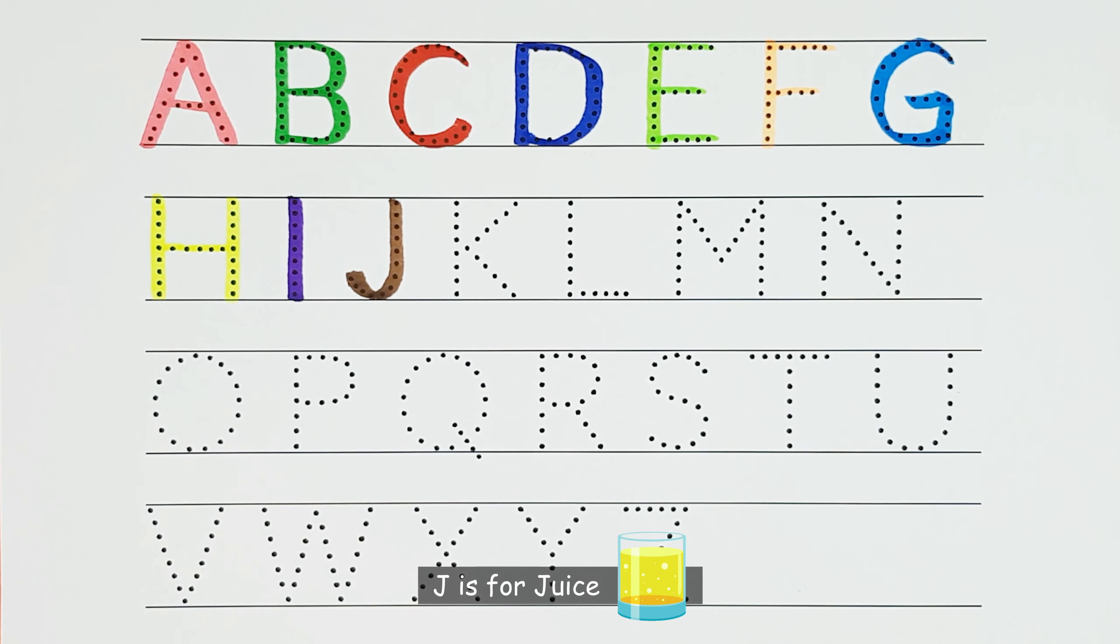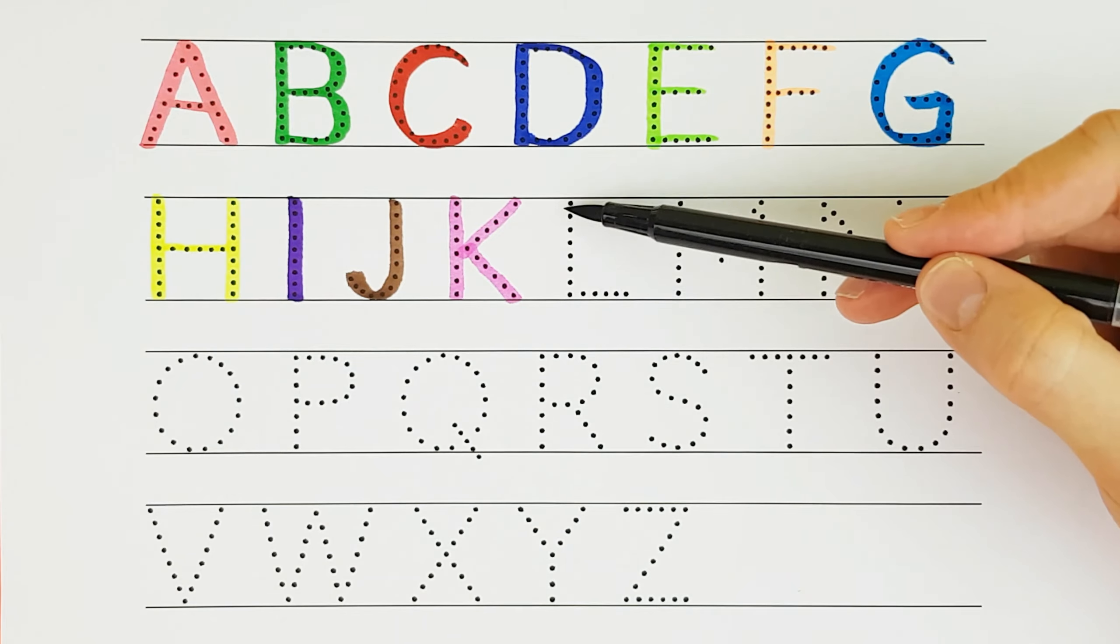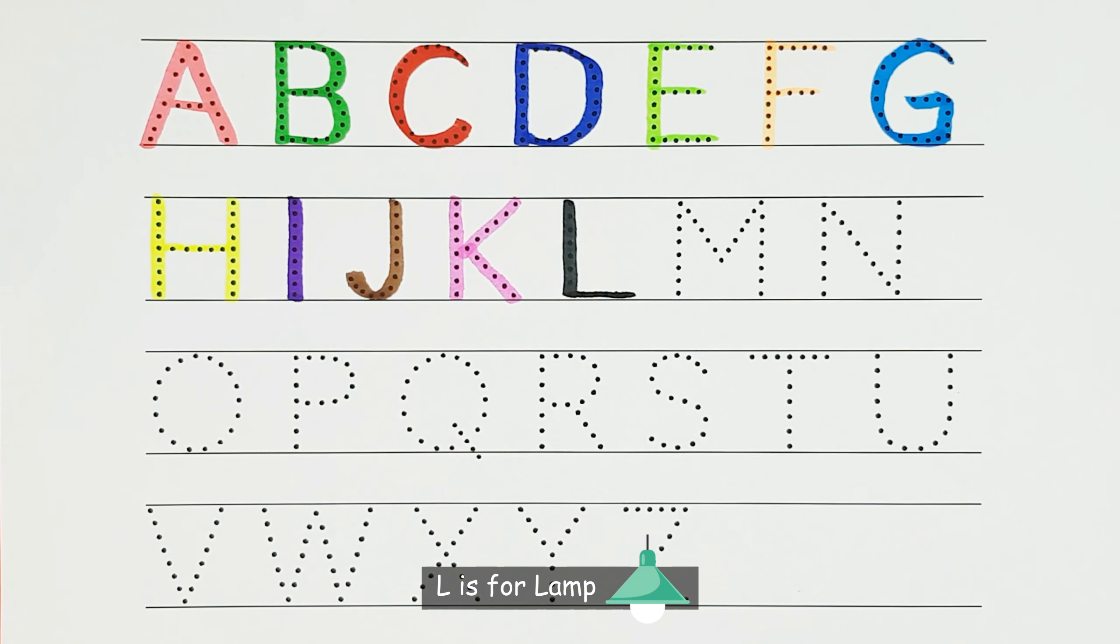J. J is for Juice. J. K. K is for Kid. K. L. L is for Lamp. L.